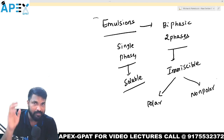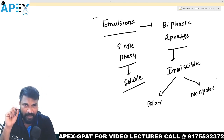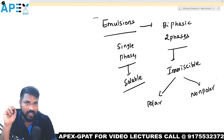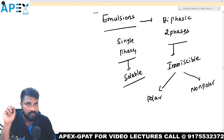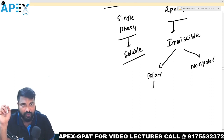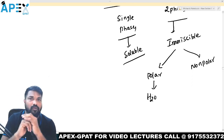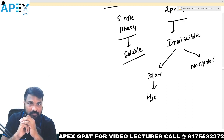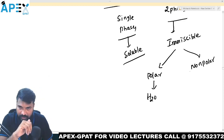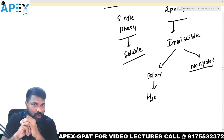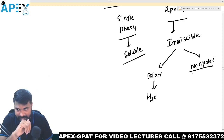What is the best example for a polar solvent? That is the universal solvent, water. Water is the polar solvent. What is the example for a non-polar solvent? It is oil.